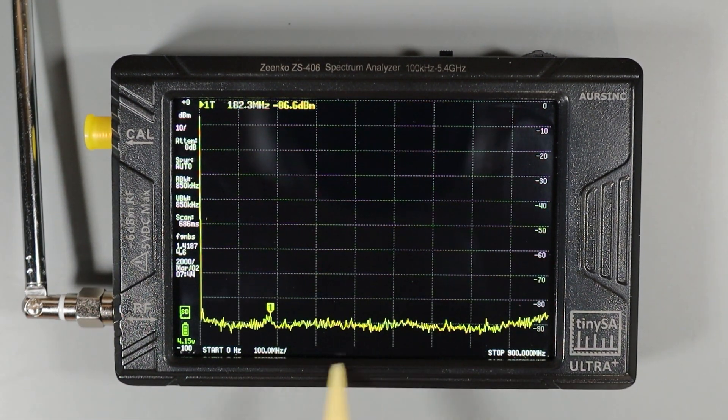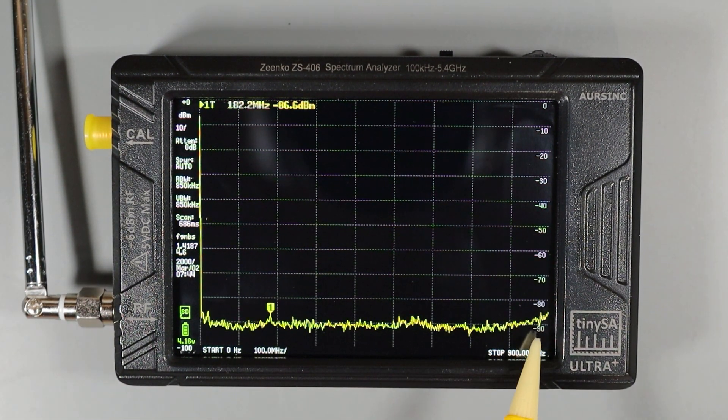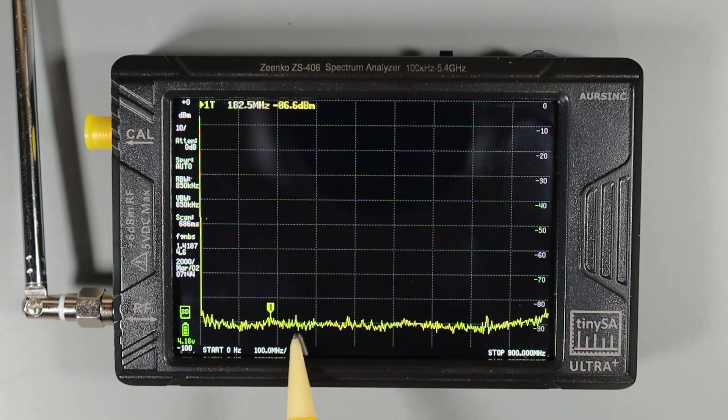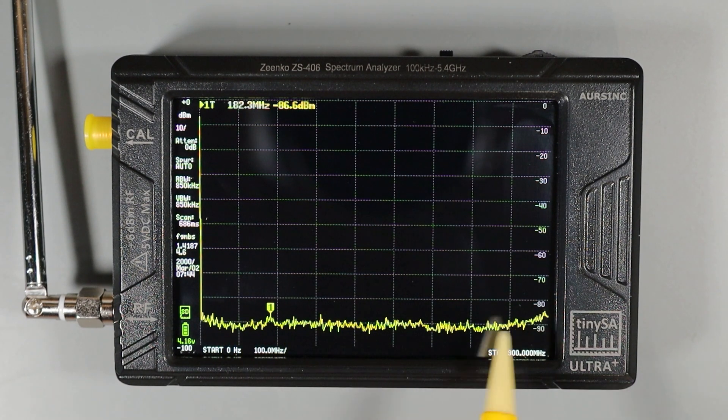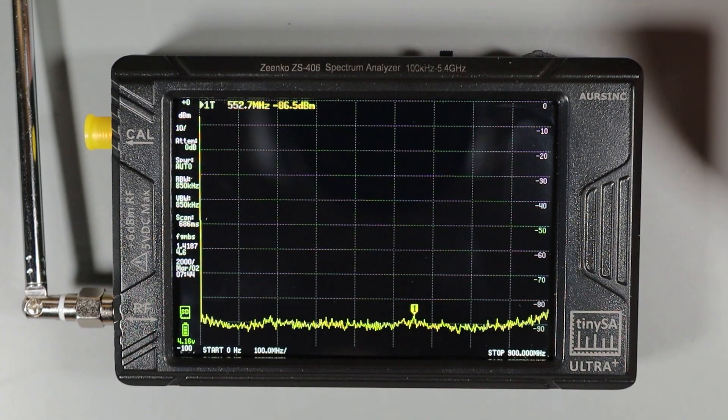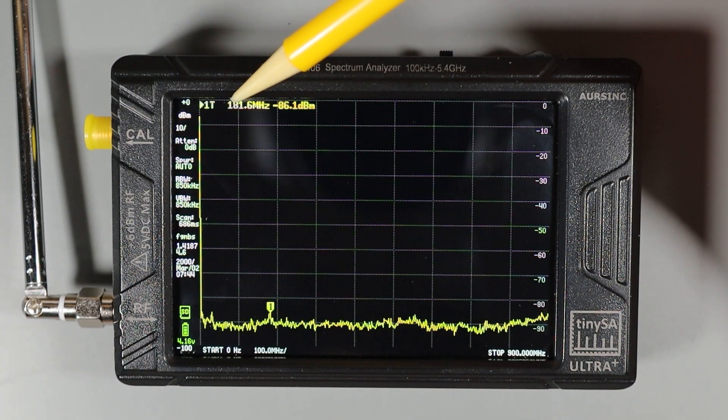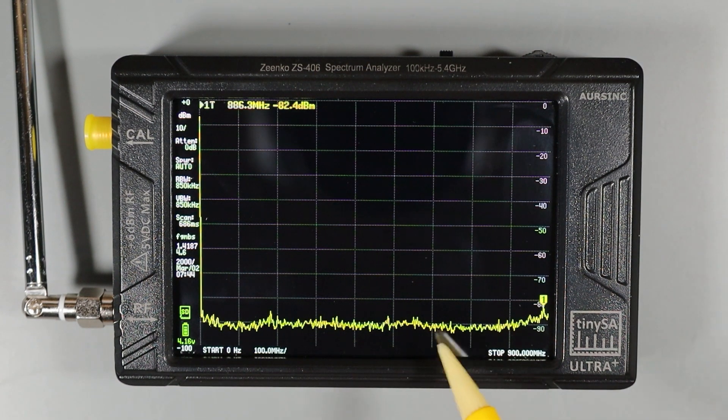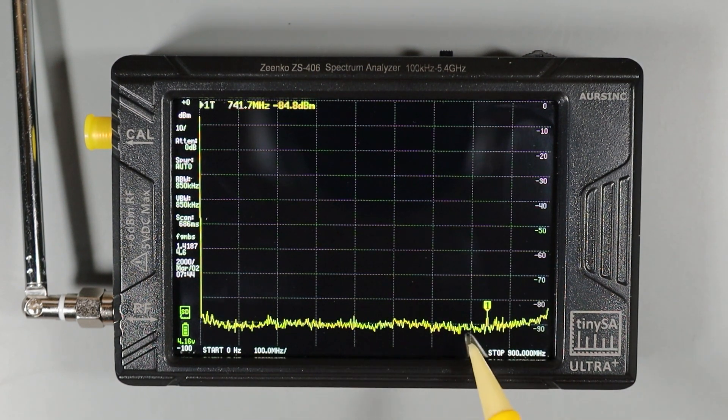You can also see that along with the background noise, the TinySA is detecting signal spikes and pointing them out with that marker number one that moves to each of those signal spikes. For each measurement cycle, the TinySA is showing us the frequency and signal strength of the strongest spike being detected down here with marker number one.